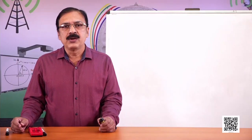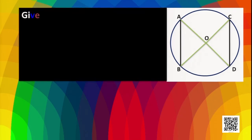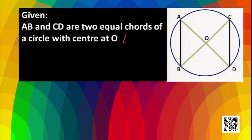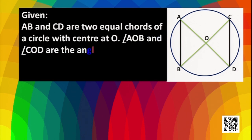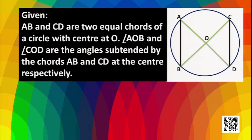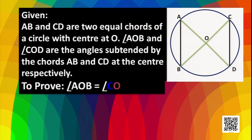In this statement, what is given? In this figure, we have two equal chords AB and CD, and the center of the circle is O. Angle AOB is the angle subtended by chord AB, and angle COD is the angle subtended by chord CD. We have to prove that angle AOB is equal to angle COD.